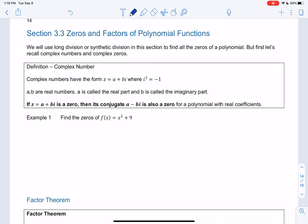All right, so section 3.3, we're going to find zeros and factors of polynomial functions. We have found zeros and factors before, but now we're going to find all of them.